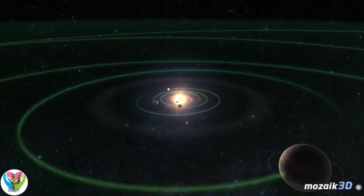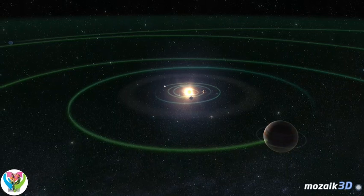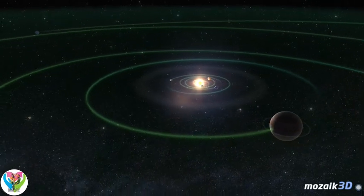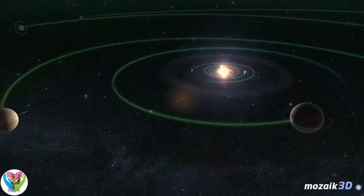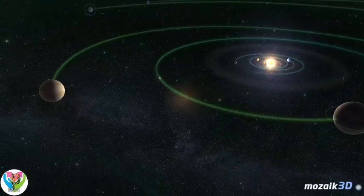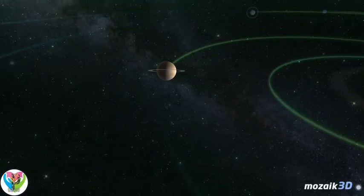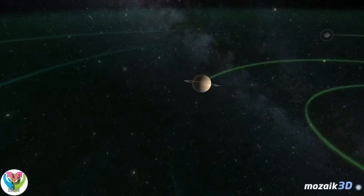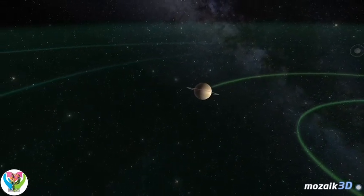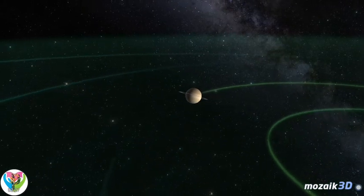All of the planets orbit the Sun on nearly the same plane, in the same direction. Their motion is direct, which means they move in an anti-clockwise direction, as seen from the north pole of the Earth. Except for Venus and Uranus, their rotation is direct too. The Sun also rotates in this direction.